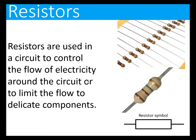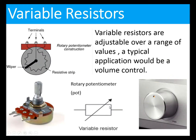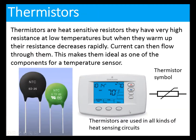Resistors are used in a circuit to control the flow of electricity or to limit the flow to delicate components. There's the resistor and its symbol. Variable resistors are adjustable over a range of values — a typical application would be a volume control. There's the variable resistor and its symbol.